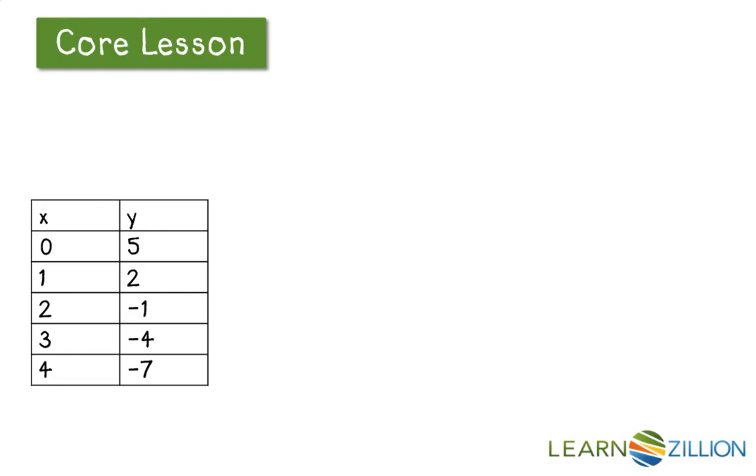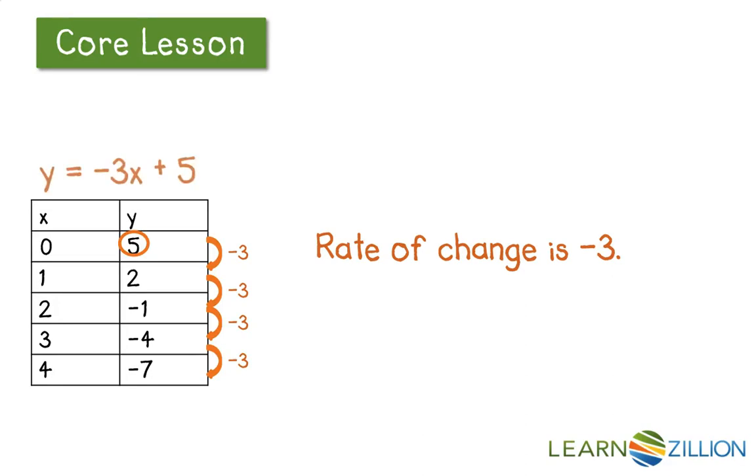Now what would happen if I have a table like this? Here I have a y-intercept of 5, but this time I'm decreasing. I'm going down by 3 every single time. So this time my rate of change is negative 3. And your rate of change can be negative. That's fine. Here I would write that as y equals negative 3x plus 5, where negative 3 is my slope, and 5 is my y-intercept.